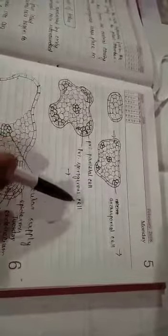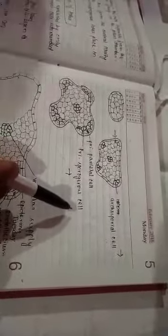Now the primary sporogenous cell divides to form sporogenous cells which further divide to form pollen mother cells or microspore mother cells. See, first all those cells are similar.